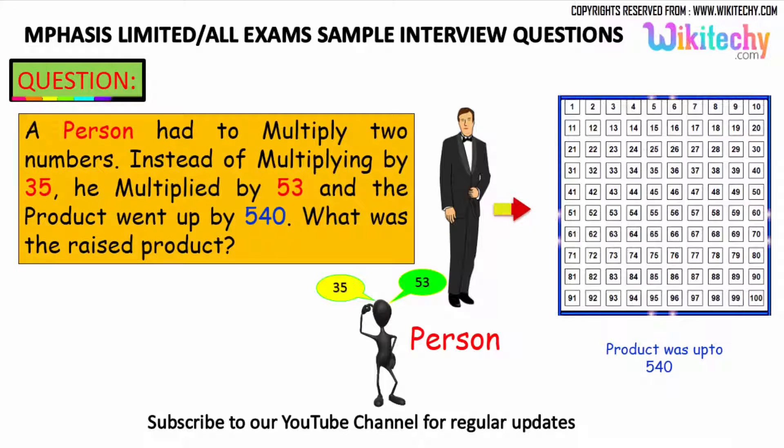A person had to multiply two numbers. Instead of multiplying by 35, he multiplied by 53 and the product went up by 540. What was the raised product? That is the question.